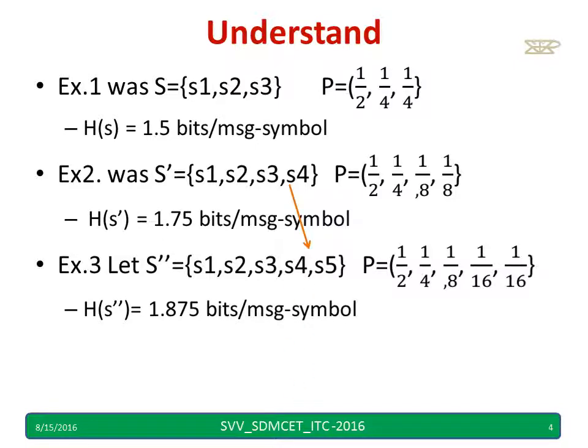In another example, s4 is divided into two sub-symbols — s41 and s42, or just s4 and s5. The probability 1/8 is divided into 1/16 and 1/16. There is no rule that I have to divide by 2 only, but ensure that after adding those two probabilities it becomes equal to the previous probability.